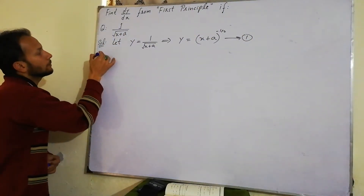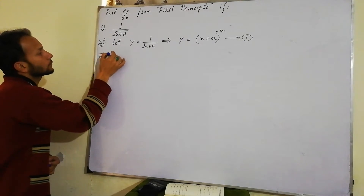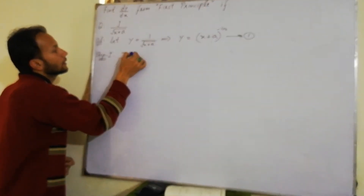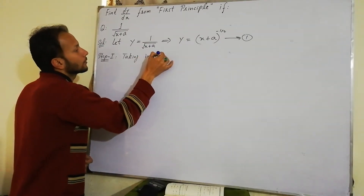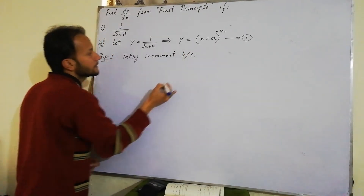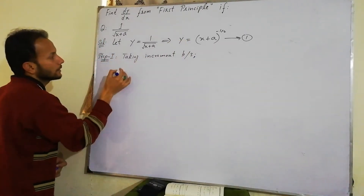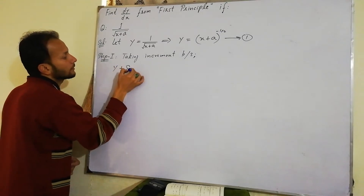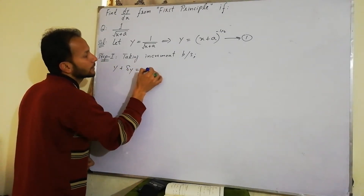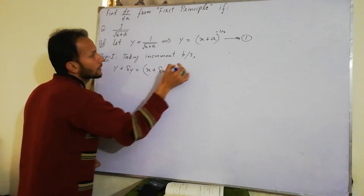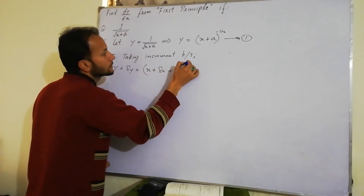Ab step 1 shuru karte hain: taking increment on both sides of equation 1. Left hand side mein y ki jagah y + Δy aayega, aur right hand side mein x ki jagah x + Δx aayega. Toh: y + Δy = (x + Δx + a)^(-1/2). Yeh equation 2 hai.